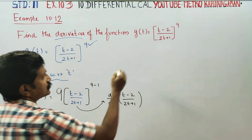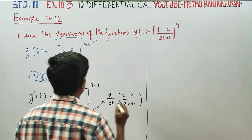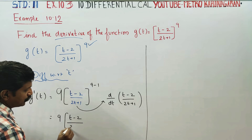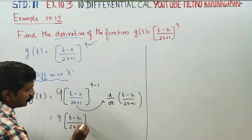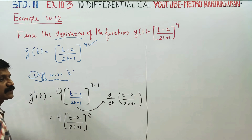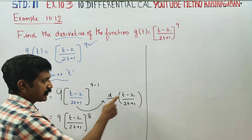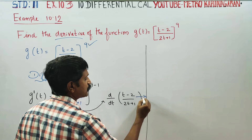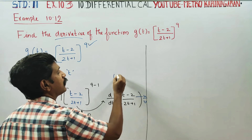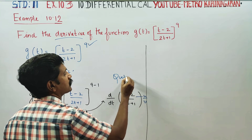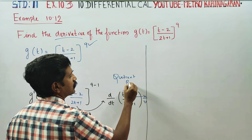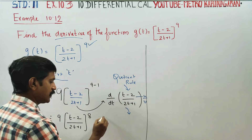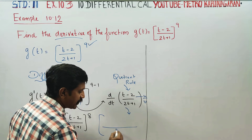Next stage: is equal to 9 times t minus 2 by 2t plus 1, whole power 8, times 9 minus 1. This differentiation matches with the u by v formula. You have to use the quotient rule for this differentiation. What is the quotient rule? Denominator square.